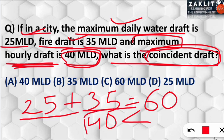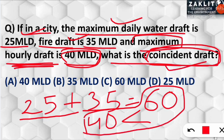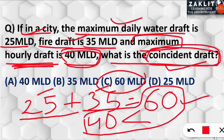You must note: first add maximum daily water draft with fire draft, then compare with the maximum hourly draft — whichever value is more becomes the coincident draft. In this case 60 MLD is more than 40 MLD, so the coincident draft is 60 MLD. In some cases if the hourly draft is more, we take that value instead. This is important — kindly note it down.